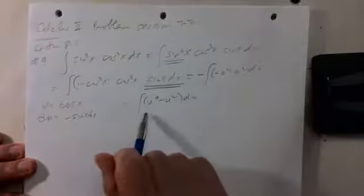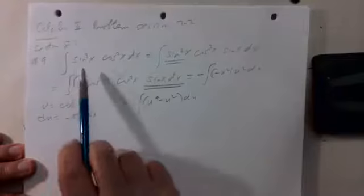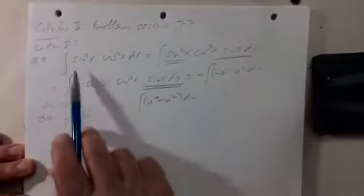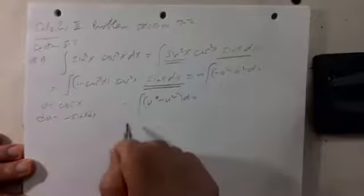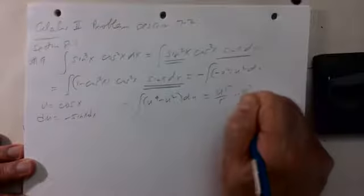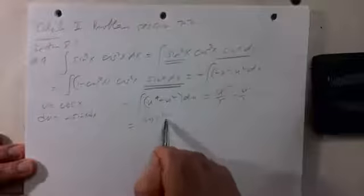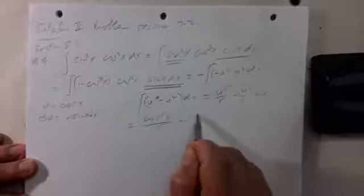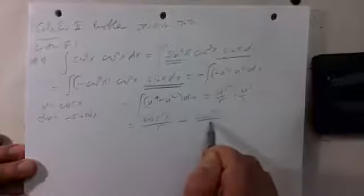That's pretty simple. The idea was to make the substitution u equals cosine x, giving sine x dx as the differential, and sine squared is one minus cosine squared. This is just u to the fifth over five minus u cubed over three plus a constant. So we get cosine to the fifth of x over five minus cosine cubed of x over three plus a constant.